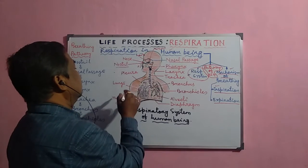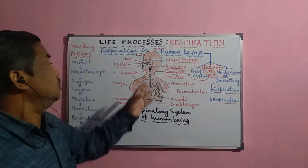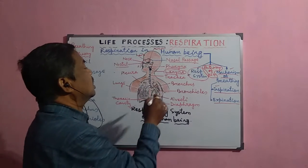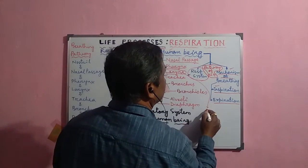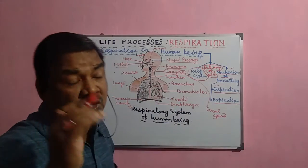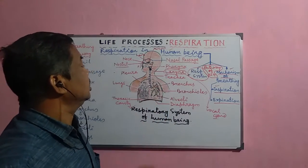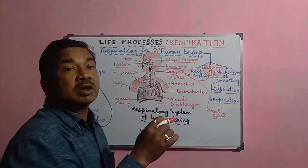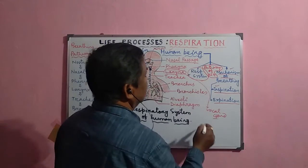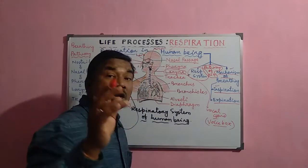After the pharynx comes the larynx, or voice box. When air comes out, vibration of the vocal cord produces sound, which is modulated by the tongue to produce speech. The role of the larynx is not primarily as a passage of air, but it helps in the production of sound — that is why it is called the voice box.